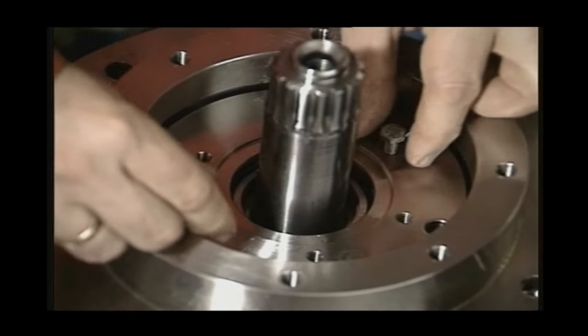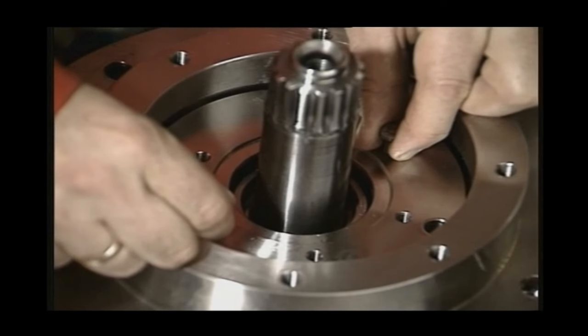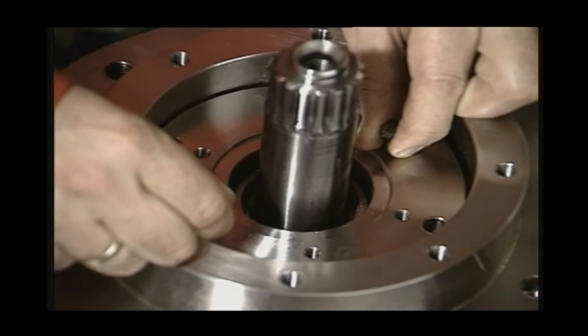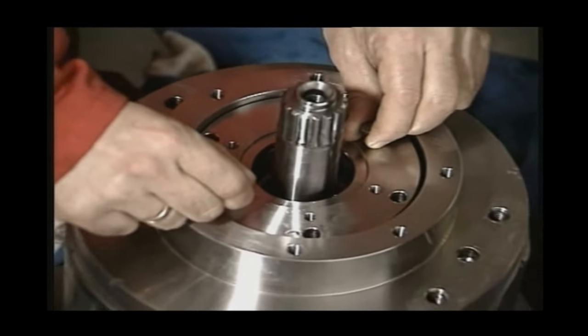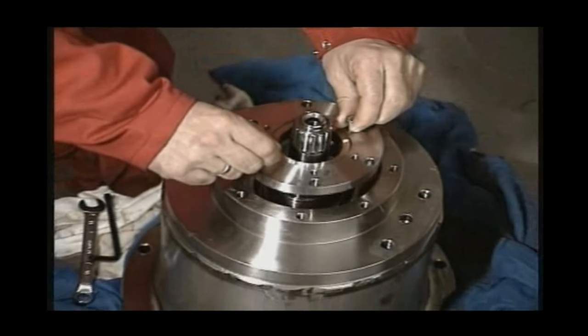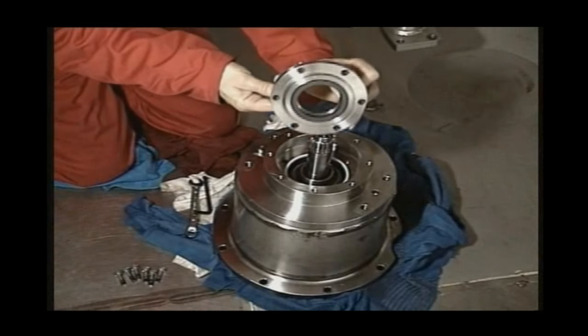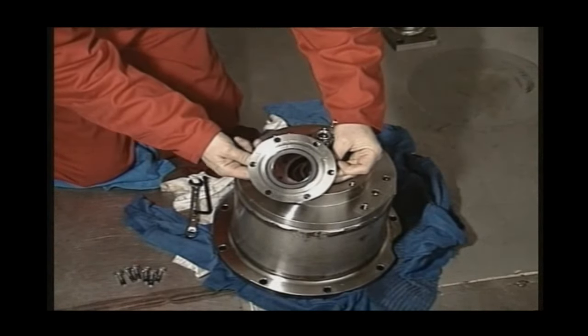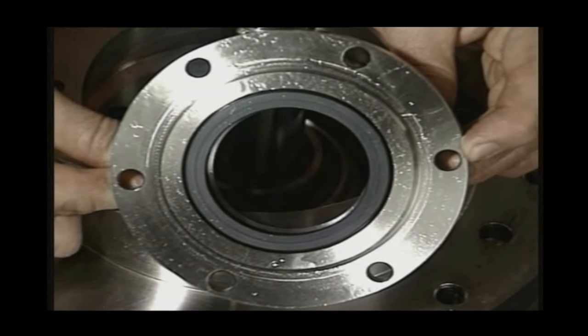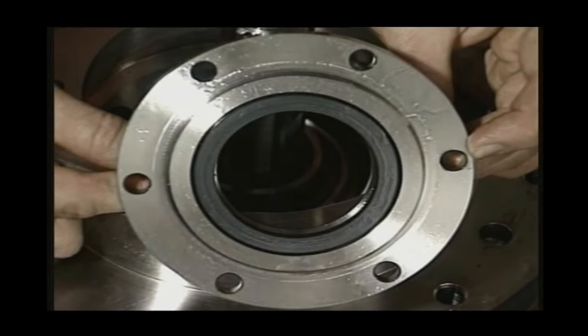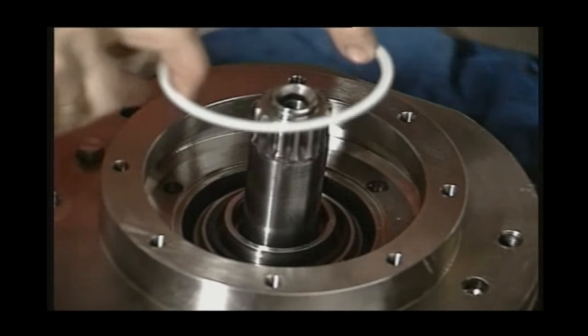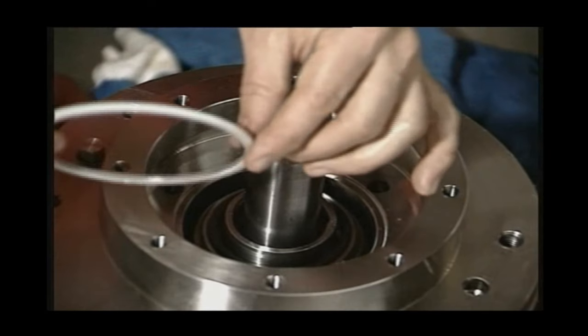When the unit is dismantled, turn it upside down and remove the upper seal ring housing and then the stationary parts of the mechanical seal. Use two lifting bolts to take out the mechanical seal. Carefully control the stationary part of the mechanical seal and the Teflon seal element.